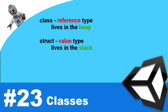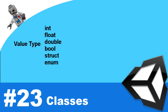Strings are examples of reference types, and also when you create a class you'll be creating a reference type. Let's start with value types first. Value types live on the stack, and here's how it works: when you're calling a method, that method will create what is known as a stack frame.